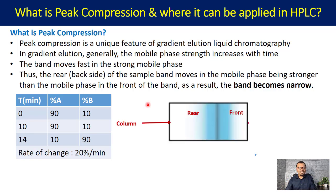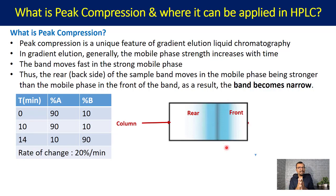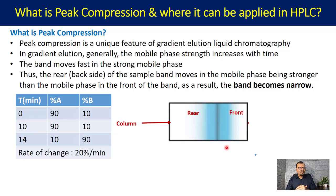Let me explain with the help of a diagram. This is a column shown on the screen, and there is a sample band represented in blue. You can see the high-concentrated analyte at the center, and as the distance increases toward the rear or front side, the concentration of analytes decreases. This gradient program starts exactly from 10 minutes until 14 minutes.